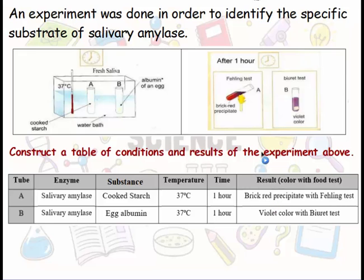We have to say that tube A gave big red precipitate with failing test and tube B gave a violet color with violet test.